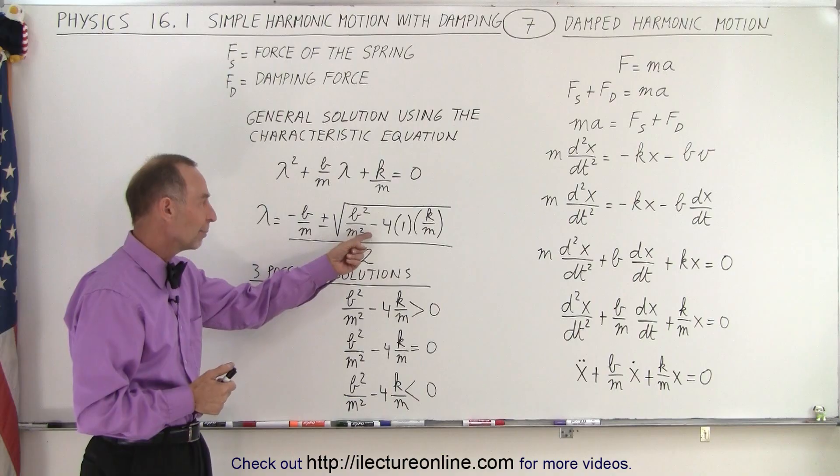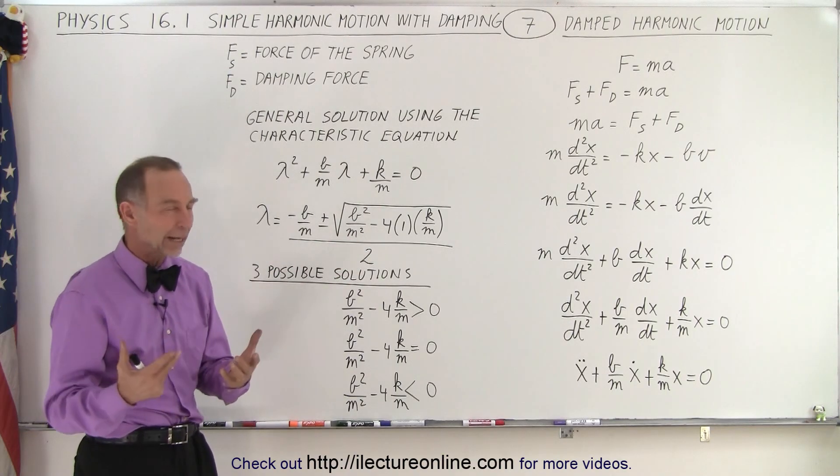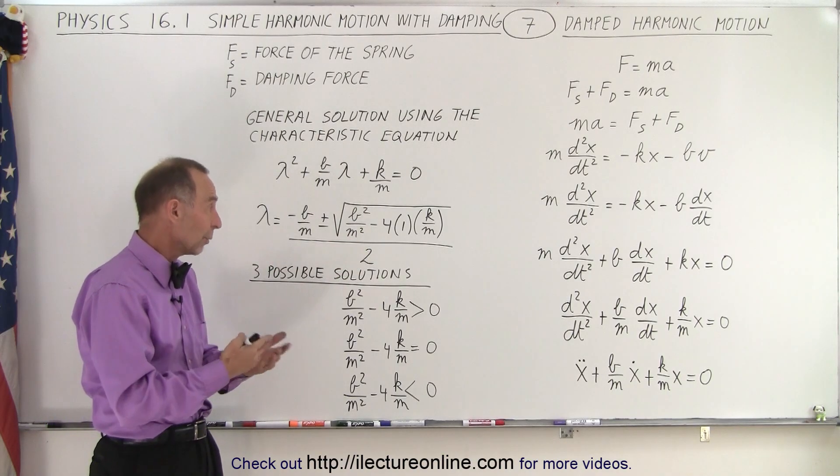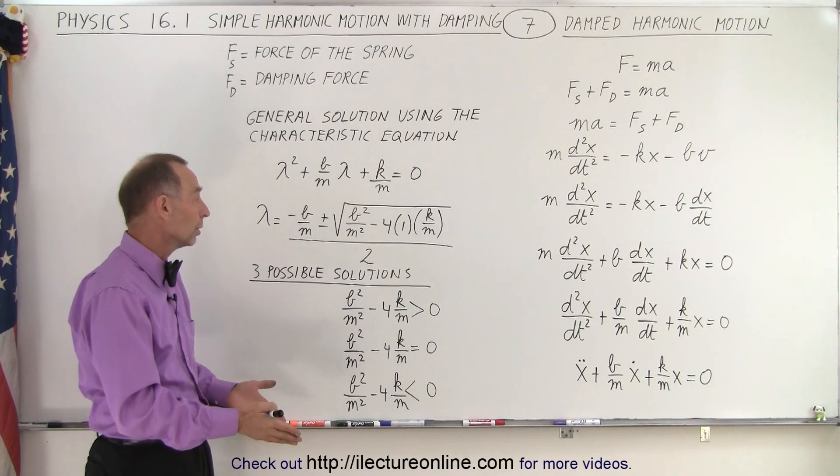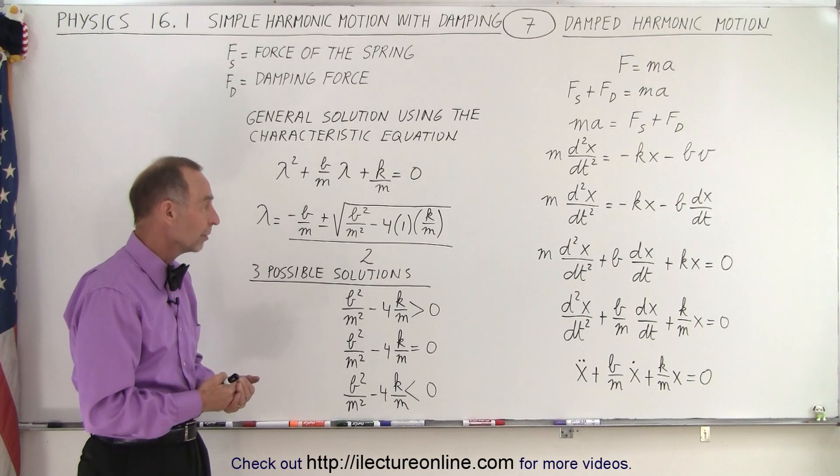But you can see that it's simply a result of that radical. Because a radical could be negative, it could be equal to zero, or it could be greater than zero.